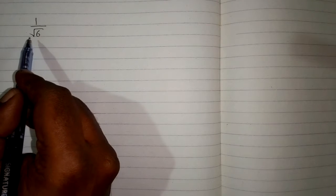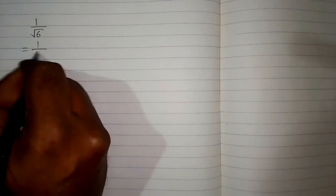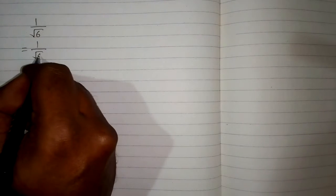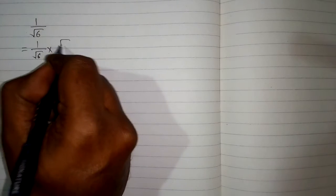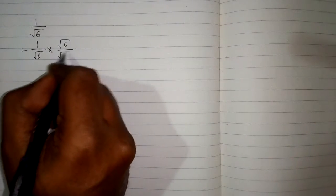In this question we have to rationalize the denominator of the fraction. Rationalizing means we have to remove the square root from the denominator, and the fraction is 1 upon square root of 6.